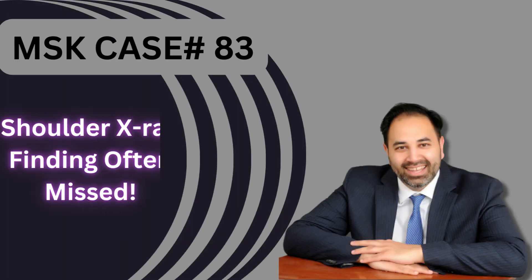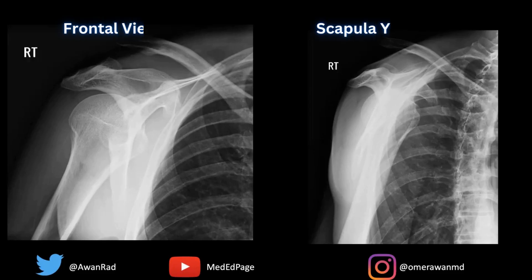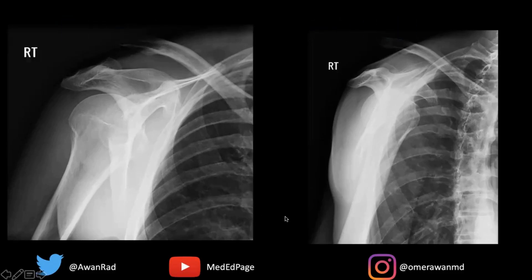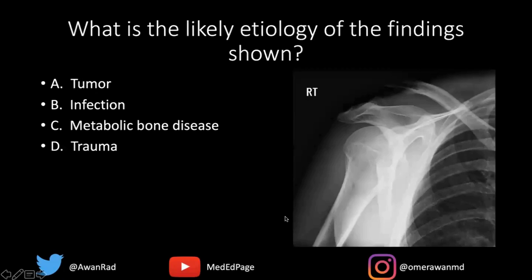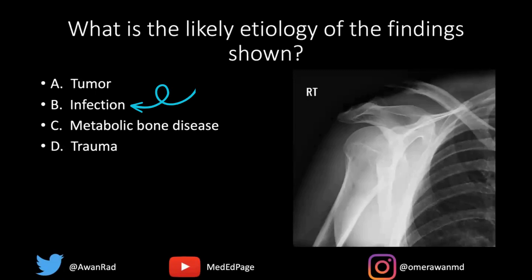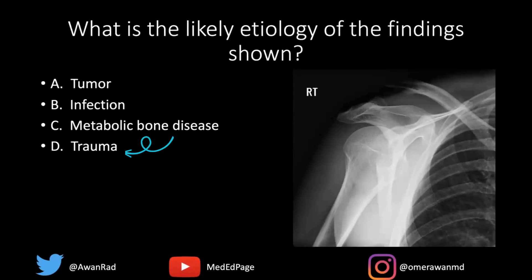Hello, everyone, and welcome to MSK Unknown Case Number 83. Here we have a frontal and a scapular wide view of the right shoulder. The question is, what's the likely etiology of the findings shown? Is this a quality of tumor, infection, metabolic bone disease, or trauma?